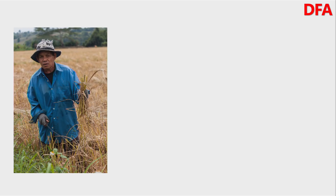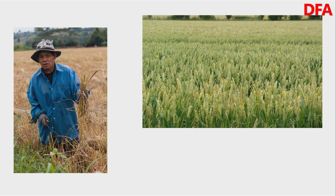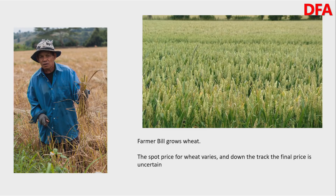Now, Farmer Bill is a wheat grower. Farmer Bill grows wheat every year — he plants at the beginning of the year and harvests later in the year, assuming there's enough rain to make the crop come full circle. Because he grows wheat and is looking at the spot price of wheat, it's not clear to him what the final price will be. Because of that, he won't know whether he's able to turn a profit in the year. Therefore, Farmer Bill faces a perpetual risk. The question is: is there a way to protect or hedge against the risk of an unknowable future price?